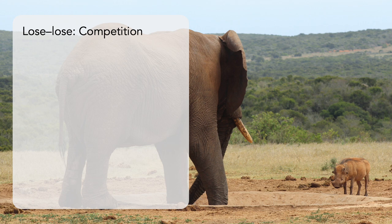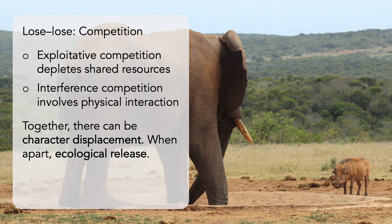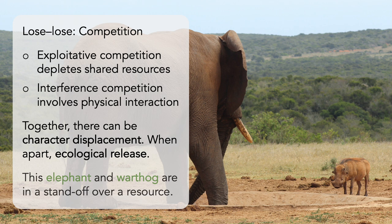Competition is a situation where no one comes out ahead. Exploitative competition depletes shared resources, whereas interference competition involves physical interactions or a change in behavior. When competition is intense, this can lead to character displacement — divergence in the average value of a character trait used to exploit a varied resource. But when competitors are absent, this can result in ecological release, essentially an increase in the density or distribution of one species no longer restricted by the other. In this picture, we see an elephant and a warthog in a bit of a standoff over a shared resource — in this case, a man-made watering hole.